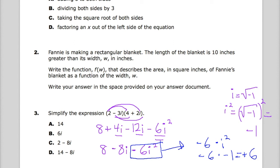8 minus 8i plus 6. And now I'm looking at some more like terms. Positive 8 plus 6 gives me 14, so 14 minus 8i. And that's it.